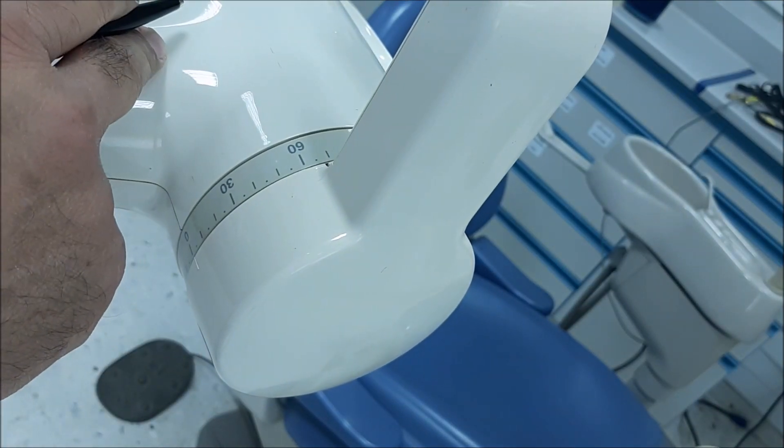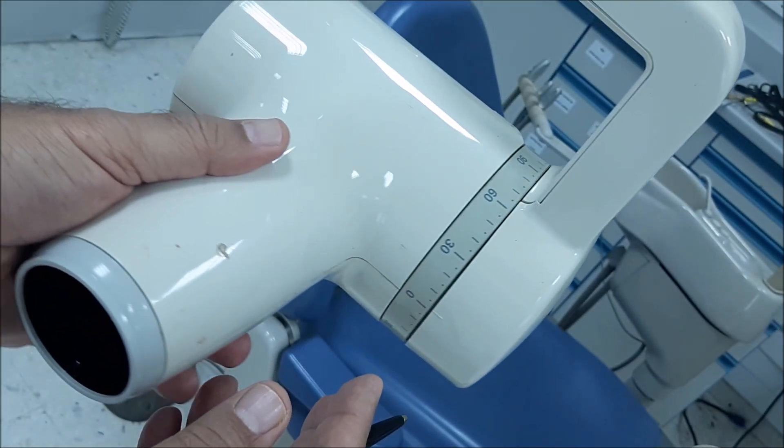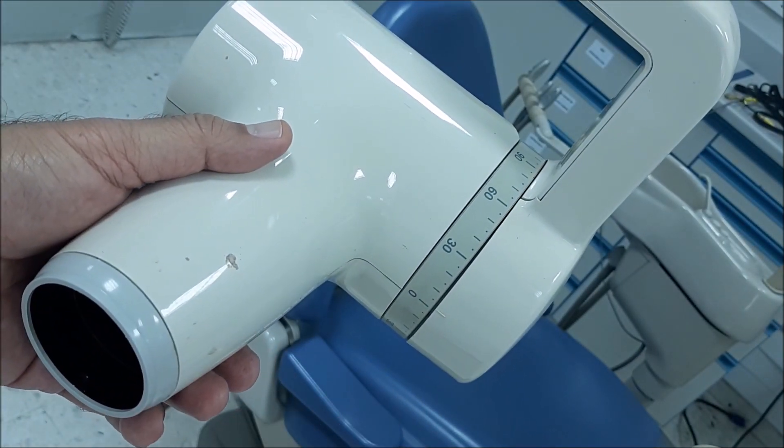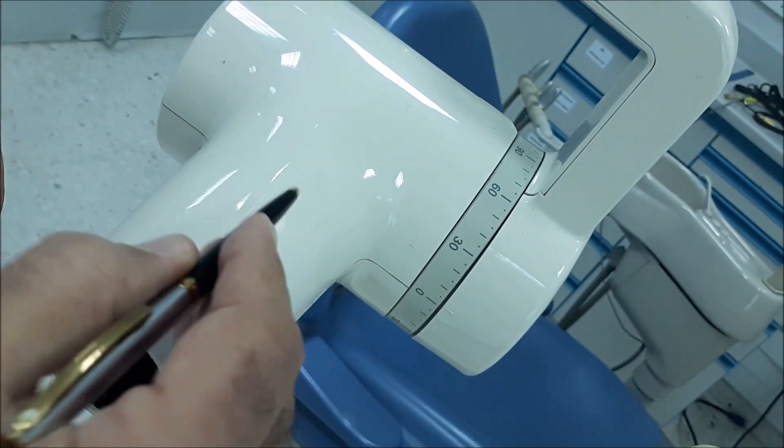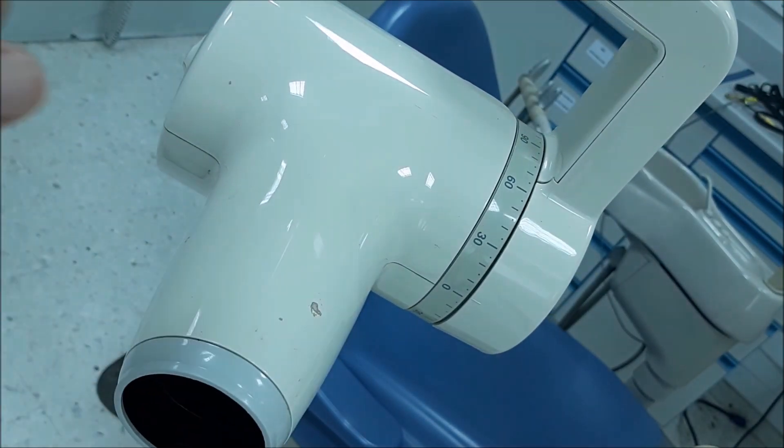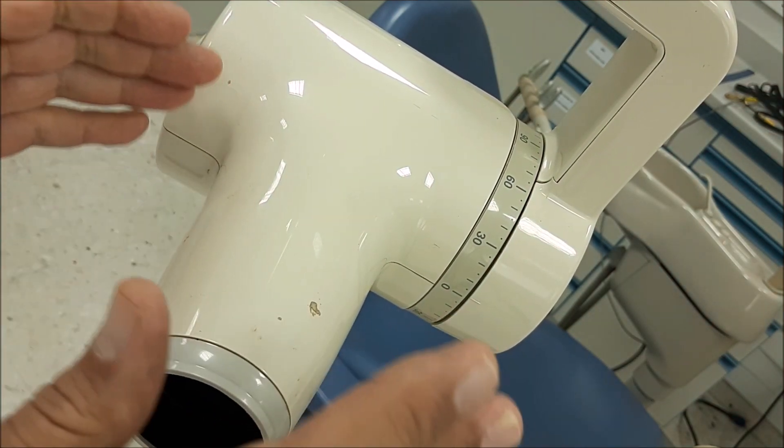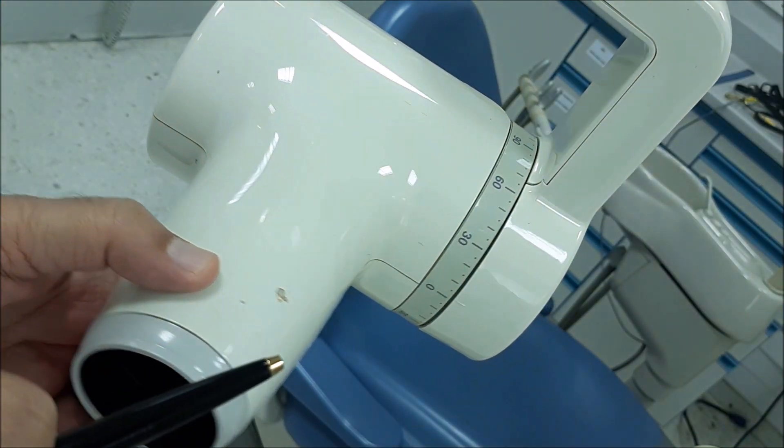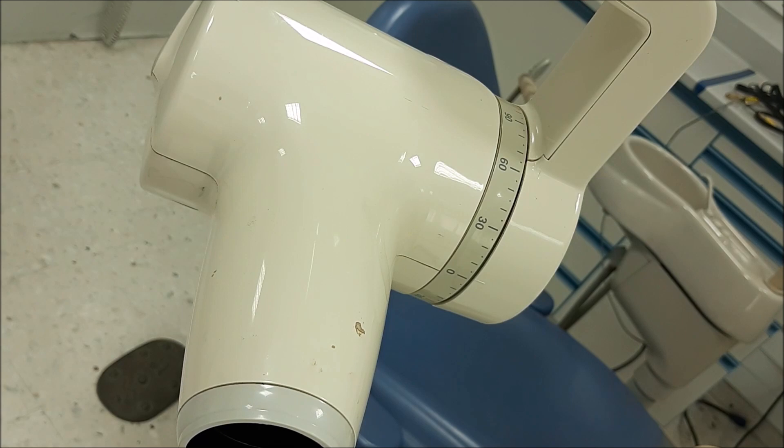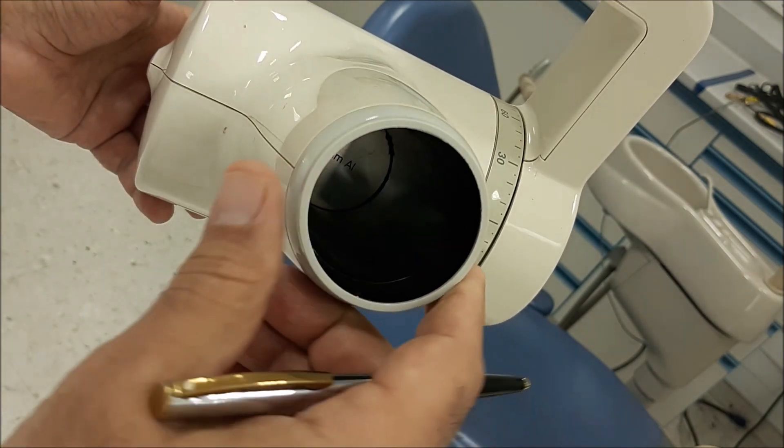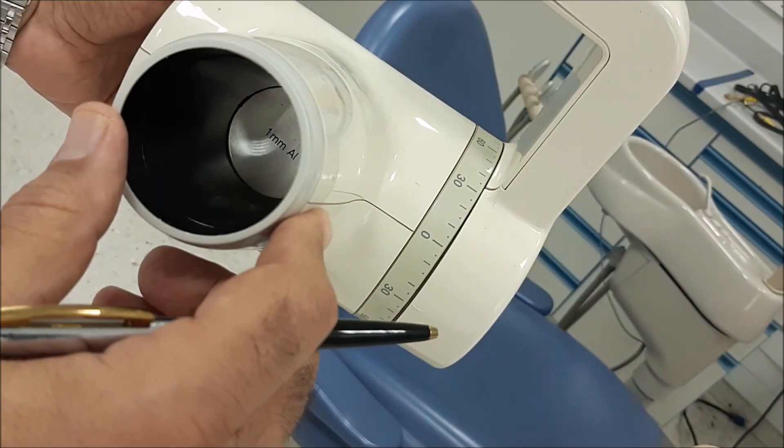The other type is 1.5. At the end, you should have minimum 2.5 millimeters equivalent of aluminum filtration, a 2-millimeter thickness of aluminum filtration, in order to properly remove all soft x-rays.